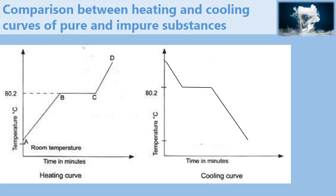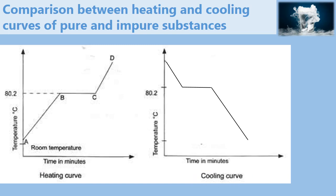We will compare the heating and cooling curves of pure and impure substances, taking the case of naphthalene. The heating curve of pure naphthalene looks like this, and the cooling curve of pure naphthalene looks like that. Now, on this same axis, we will draw the heating curve and the cooling curve of impure naphthalene.